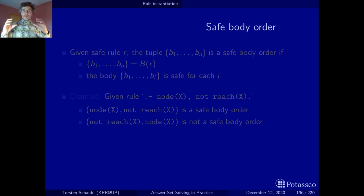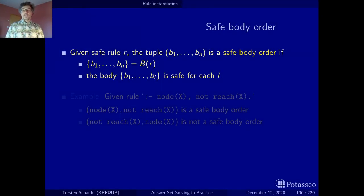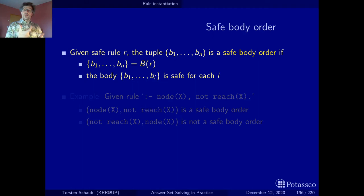But within a body you may have an arbitrary ordering, because in ASP the idea is you're declarative — you don't care about the order of the rules, and you don't care about the order of the body literals. But when it comes to grounding, they have to be ordered so that you get the instantiations. A safe body order makes sure that each variable occurs first in a positive body literal before it is used in a negative one or in a comparison, so the variable gets first instantiated by the positive body literal and then propagated to the negative ones or the comparisons.